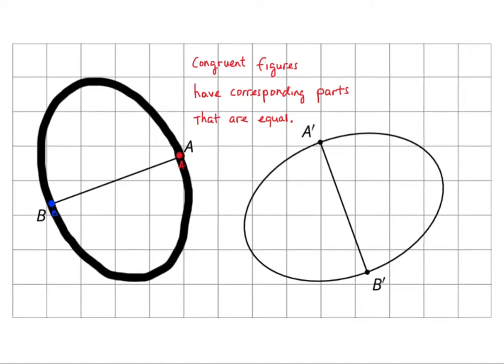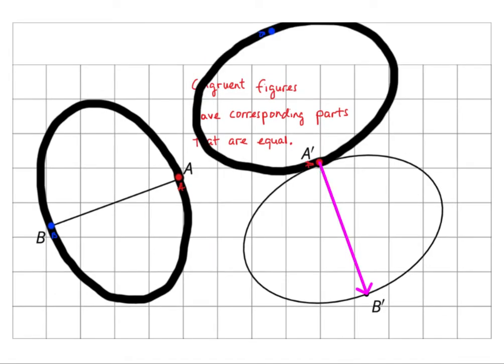You can rotate the oval on the left, rotate it 90 degrees, and then you can slide it down and it will cover this image exactly. So they are congruent images. They are the same.